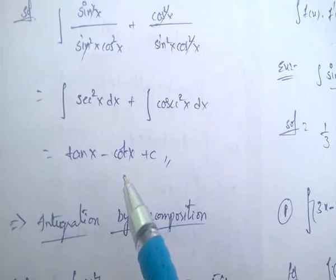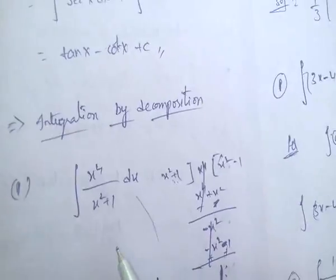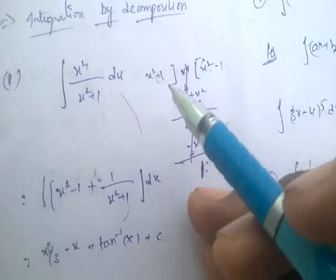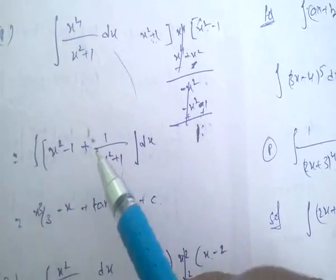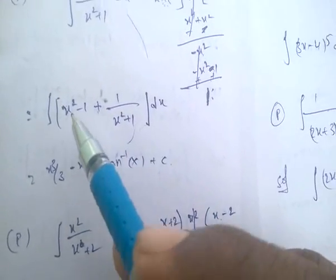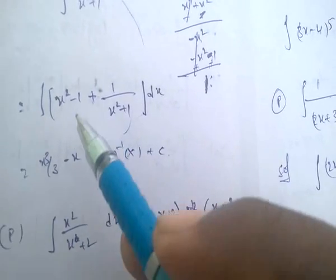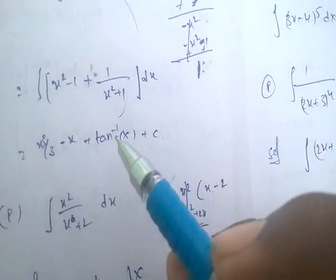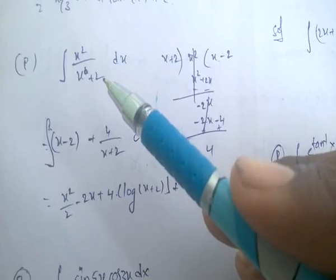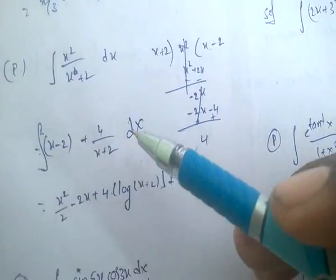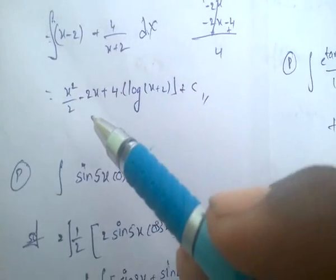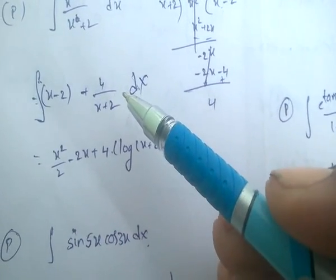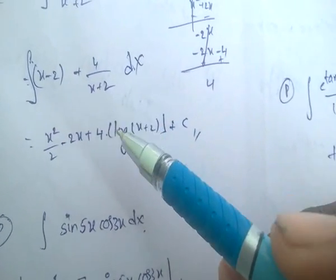Sec²x minus cos²x equals minus cos x. Next, integration by decomposition method: divide x⁴ by (x²+1) to get the quotient, then integrate each part. Integral of x² gives x³/3, integral of 1 gives x, and 1/(x²+1) gives tan inverse of x. For the second problem, divide x² by (x+2); then 1/(x+2) gives integral log of (x+2).